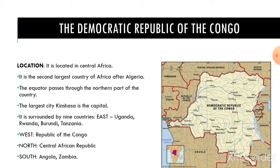To the east: Uganda, Rwanda, Burundi, and Tanzania. To the west: Republic of the Congo. To the north: Central African Republic. To the south: Angola and Zambia.